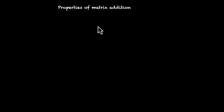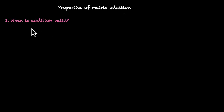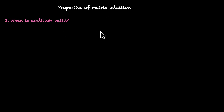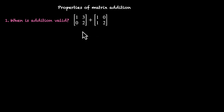In this video, we'll talk about properties of matrix addition. Before we talk about the properties, let's clear one thing: when is addition valid? For real numbers, you can add any two of them, but for matrices, you can only add them if they have the same order, if they have the same dimensions.